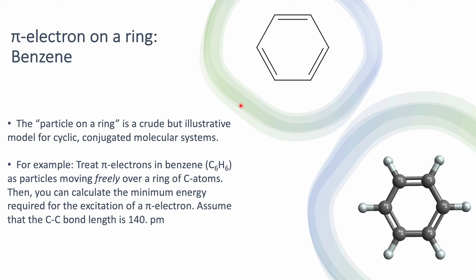Now for this particular case, we're going to treat the electrons in benzene as particles that are moving freely over this carbon ring. Remember that you have resonance, and we think about those electrons in this pi system in benzene as being delocalized all around the molecule. So with that, if we apply this model, we can calculate the minimum energy required to excite one of those pi electrons.